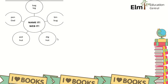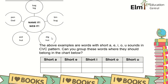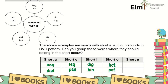Next: Name It, Web It. The above examples are words with short A, E, I, O, and U sounds in CVC pattern. Can you group these words where they should belong in the chart below? So what are the short A words in the web? We have bag. Short E: leg, pen. Short I: dig. Short O: hot, pot. Short U: bug. So these are the short vowel words we can find in the web.